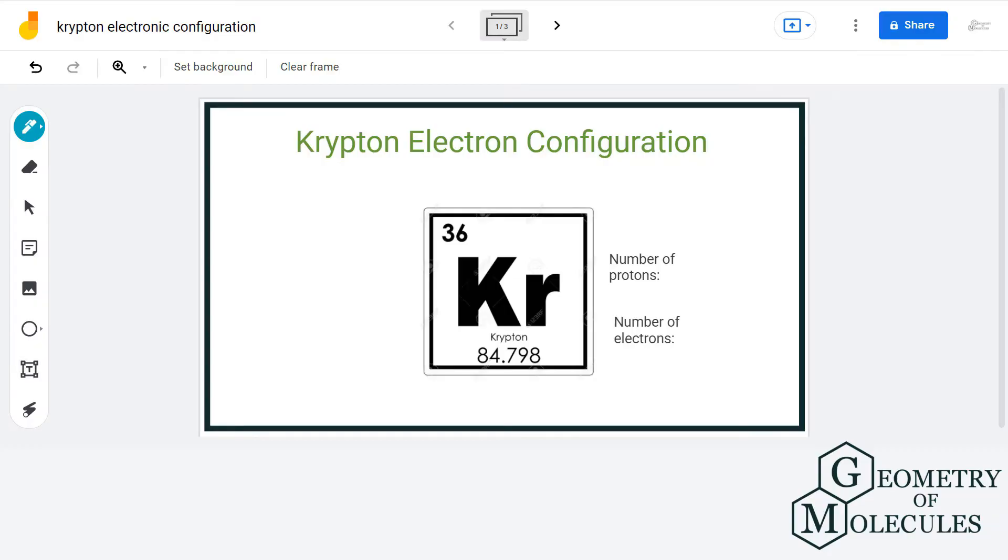Hello guys, welcome back to our channel. In this video we are going to look at the electronic configuration of Krypton. To know the electronic configuration of any given atom, we have to first look at its atomic number, followed by the total number of electrons, and then look at the electronic configuration chart to get the final electronic configuration of the atom.